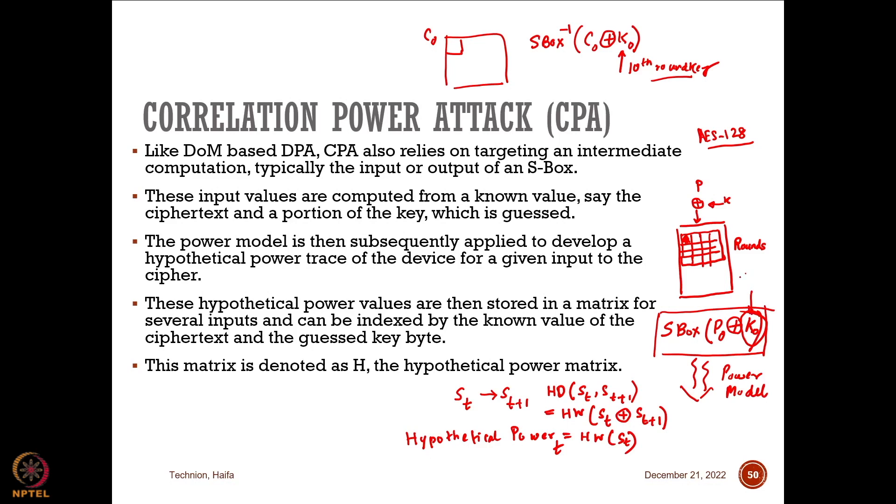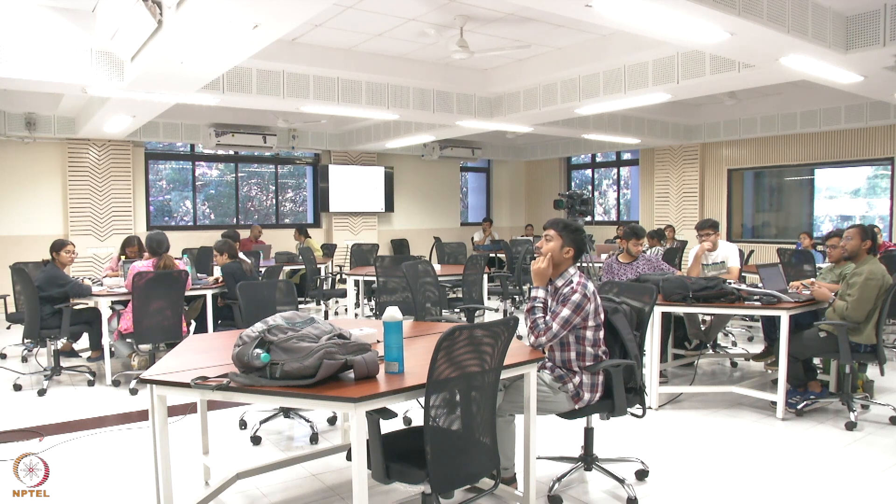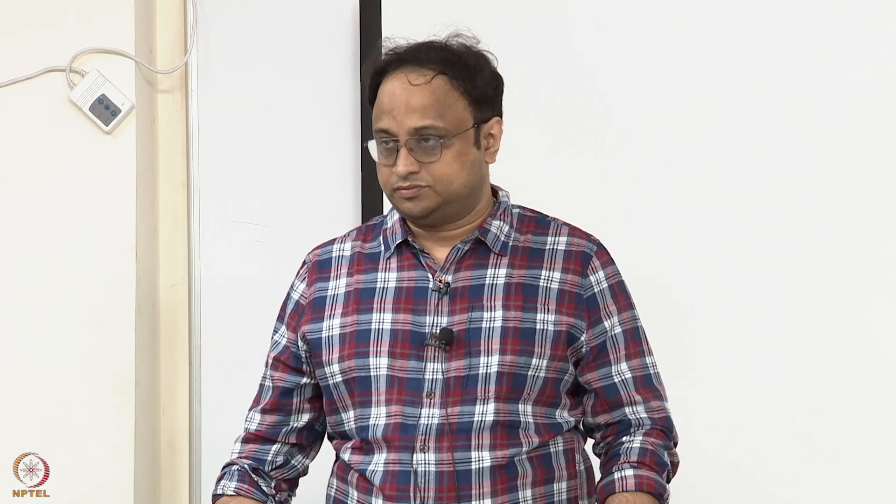I know the key can take 256 possible values. I make one hypothesis and try to verify whether it is indeed the correct key. This gives me my definition of hypothetical power. I will use this hypothetical power estimate and match it against my real power trace, which I have been capturing during the encryption process. If they match well, my key guess was likely correct.